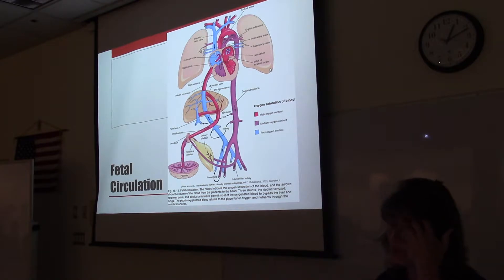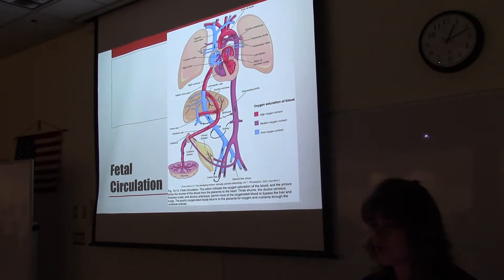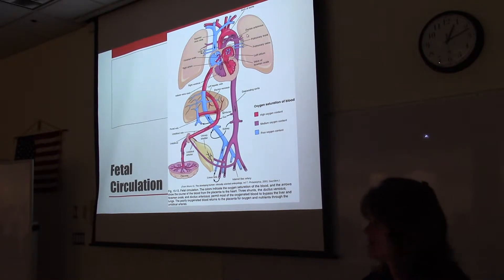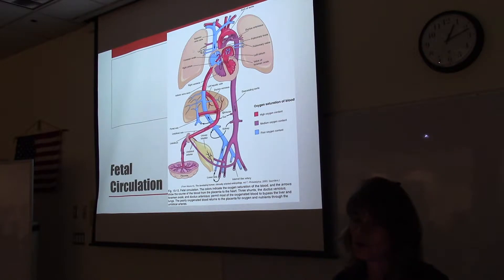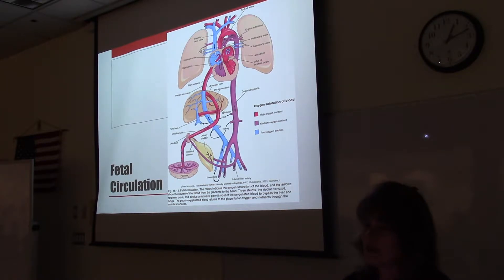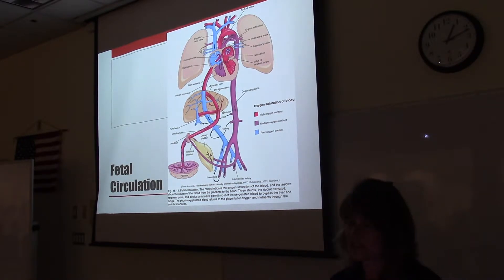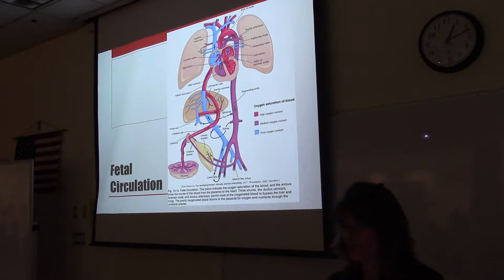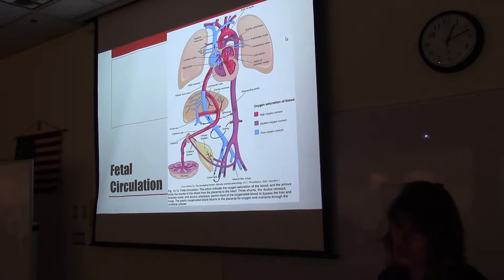Once the baby's born, we expect the foramen ovale to close from the higher pressure on the left side of the heart. We expect the pulmonary vessels to dilate and all of the blood flows to the lungs — whereas in utero only 10% went to the lungs — so we get big pulmonary vasodilation. Now that the blood is flowing to the lungs, the ductus arteriosus becomes the pathway of least resistance, and it should close within a few days or several weeks after birth.